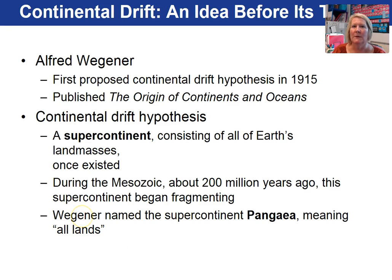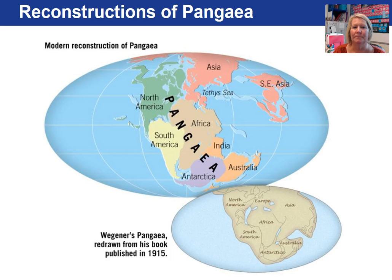Alfred Wegener proposed the continental drift hypothesis, which stated that a supercontinent named Pangaea existed 200 million years ago and then began to break apart — the continents sit today where they are from the breakup of Pangaea. The bottom image shows Wegener's idea of what Pangaea looked like, and he was quite close, though a more modern reconstruction has Asia in a slightly different position.